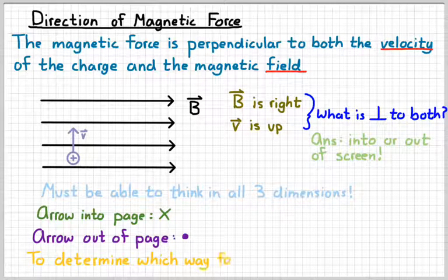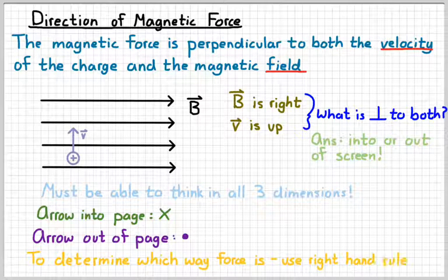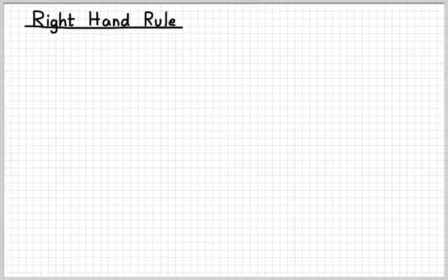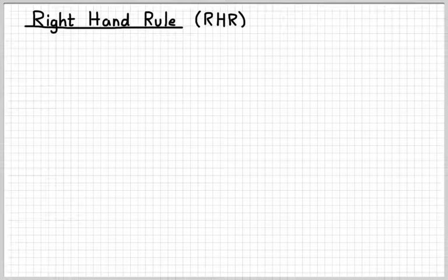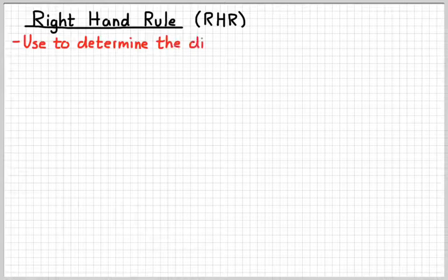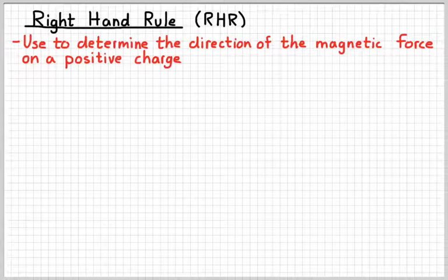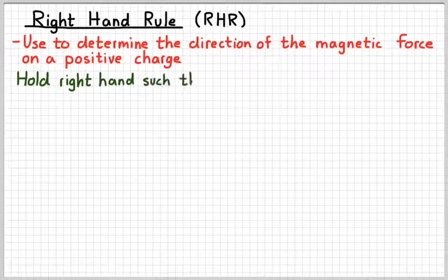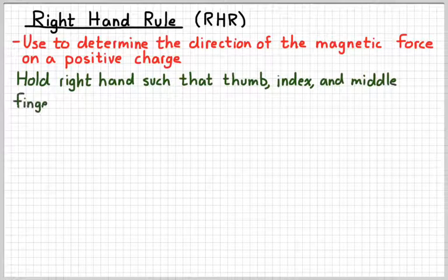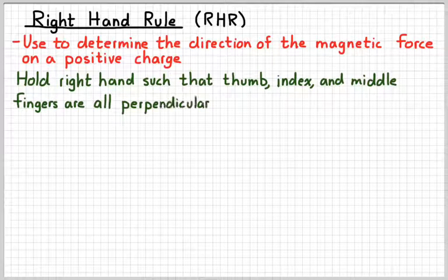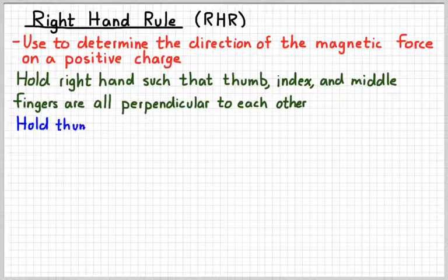In order to determine which way the force actually is — we've narrowed it down to two directions — we would use a rule called the right-hand rule. We have several right-hand rules that we need to use; this is the one that allows us to find the direction of a magnetic force. You can abbreviate it RHR. We use this to determine the direction of the magnetic force on a positive charge — keyword positive. The first thing you're going to do is orient your right hand so that your thumb, index, and middle finger are all perpendicular to each other.